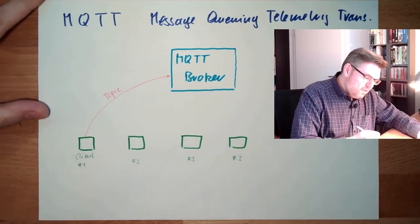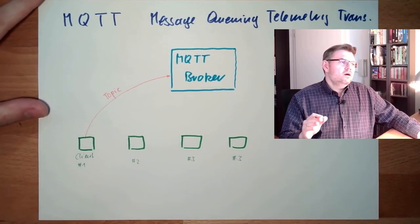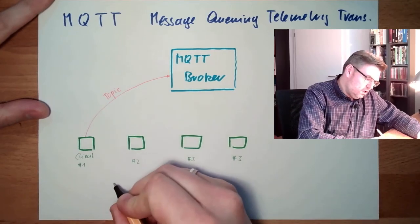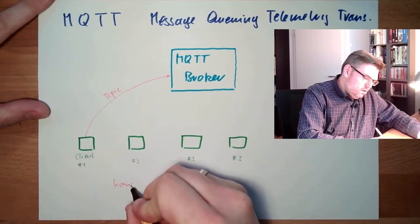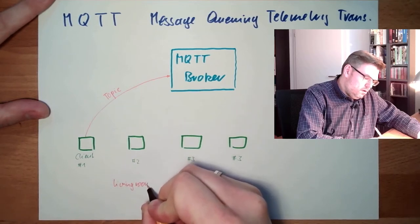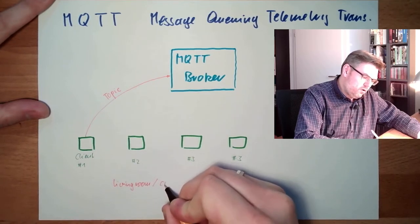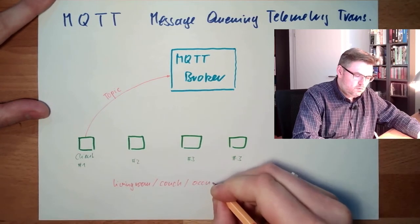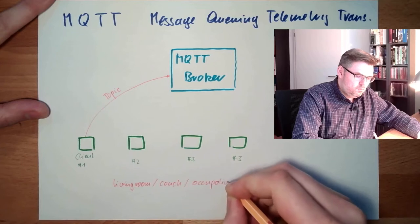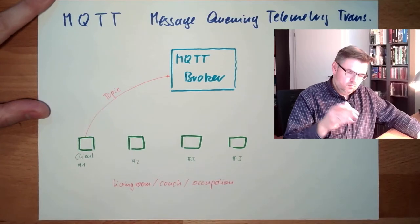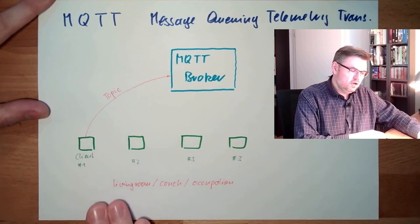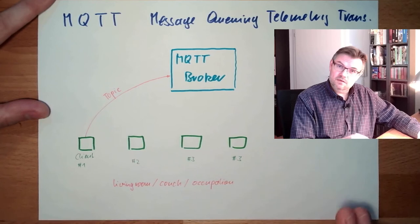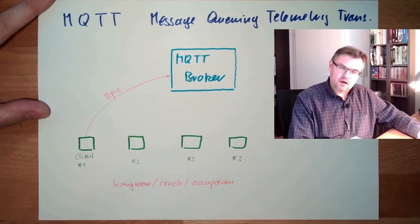The topic name looks a little bit like a directory path. For instance: 'living room slash couch slash occupation'. Occupation zero means nobody sitting. When someone sits down the topic value changes to one, then two as more people sit. It's a structured way to name topics.